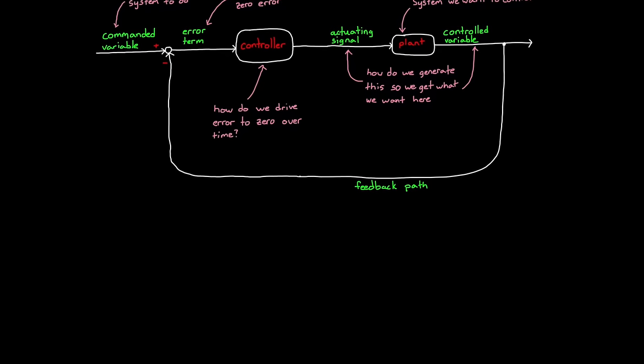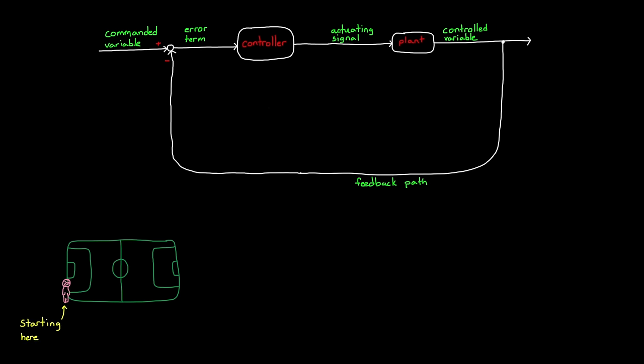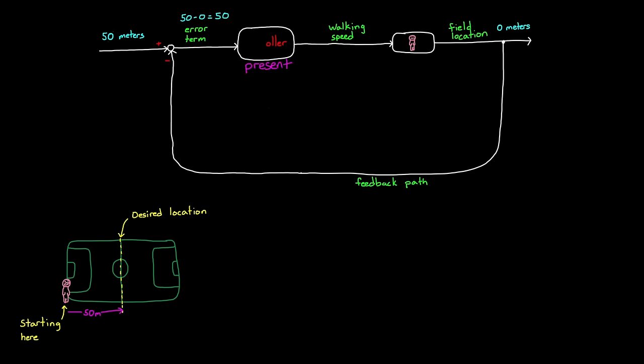Let's illustrate this with an example. Imagine you are standing on the goal line of a soccer field and you want to walk to the half field line 50 meters away. In this case, you are the plant. The actuating signal is the speed and the direction that you walk. And your current location on the field is the output variable, or zero meters to start. And then 50 meters is the command. Therefore at the beginning, your position error is 50 meters.